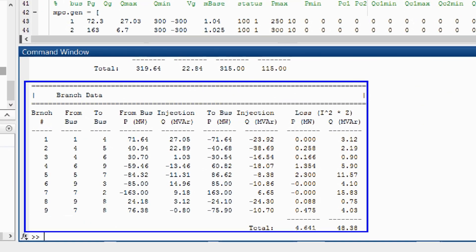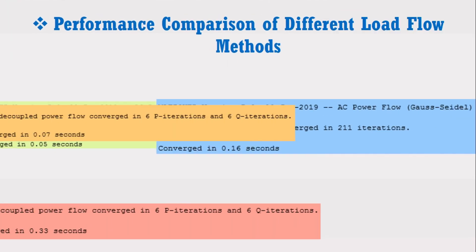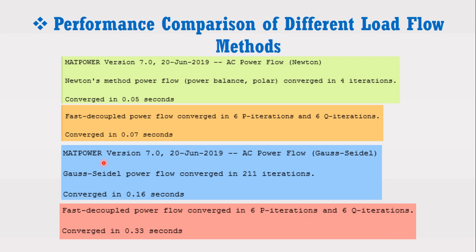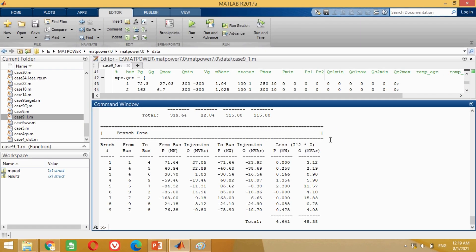Friends, depending upon the processor of your computer or laptop, your results may vary in terms of computational time. The comparative results of all load flow methods in terms of iterations and computational time are shown here. For the IEEE 9 bus system, the Newton-Raphson method has superior performance both in terms of iterations as well as computational time. The fast decoupled load flow method is at the second position, followed by the Gauss-Seidel method. By following the same procedure, the load flow analysis of any system can be carried out in MATPOWER toolbox. That's all for today's tutorial. If you like it, don't forget to like the video, subscribe to the channel and share it with all your friends. Thank you very much.